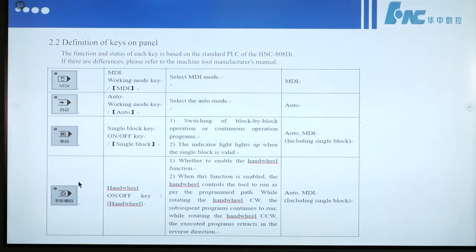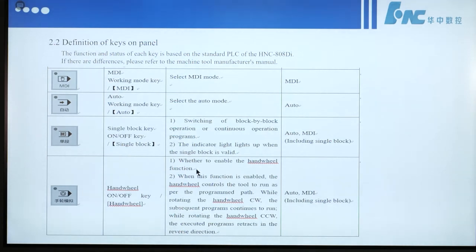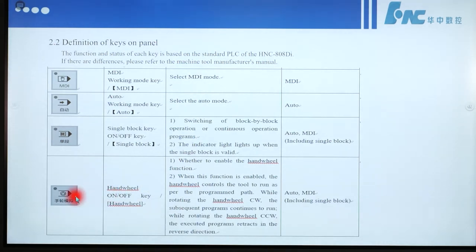If we press this button, it is Handwheel Emulation on or off. Number 1: whether to enable the Handwheel Emulation function. Number 2: when this function is enabled, the handwheel controls the tool to run as per the programmed path. Rotating the handwheel CW continues the program; rotating CCW retreats the executed program in reverse. This button works in auto mode or MDI mode, including single block mode.